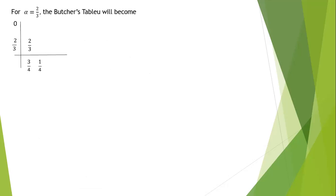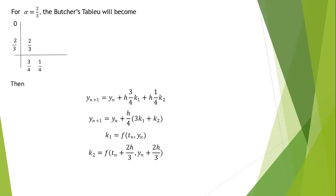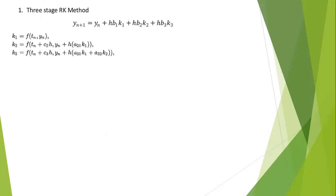When alpha equals 2/3, the Butcher tableau gives the scheme: y_(n+1) equals y_n plus h·(3/4)k₁ plus h·(1/4)k₂. Factorizing 1/4 gives y_(n+1) equals y_n plus (h/4)(3k₁ plus k₂), where k₁ equals f(t_n, y_n) and k₂ equals f(t_n plus (2/3)h, y_n plus (2/3)h·k₁). That is the scheme for alpha equals 2/3. Now let us move to the third stage.